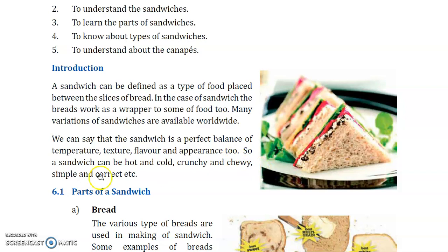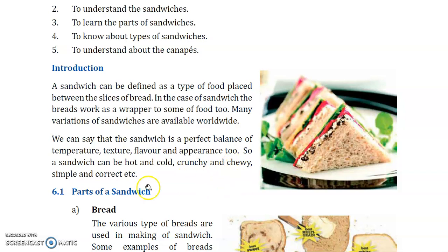A sandwich can be hot or cold, crunchy and chewy — crunchy means crispy, and chewy means a rubbery type texture. It can be simple or complex. We know that the sandwich is a very important part of food.